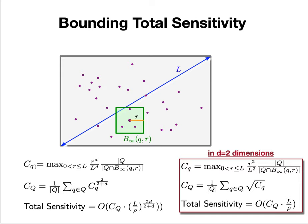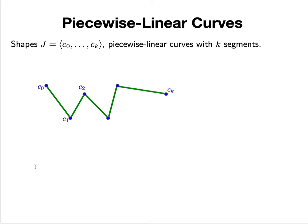You want to find a ball with large radius, the maximum radius without too many points in it. It's this expression you maximize over all choice of radii. The radius is large but the number of points inside is not too large. This controls the sensitivity of that point. Then total sensitivity corresponds with C uppercase Q, which is the average to the 2/2^d - the square root in 2D of each of these individual terms.